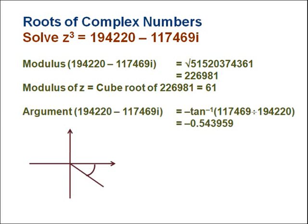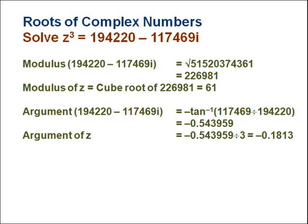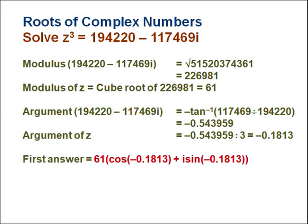Next we find the argument of the complex number. As seen from the diagram, it will be negative, so we compute −arctan(117,469 / 194,220) = −0.543959. To find the argument of one cube root, we divide by 3, giving −0.1813. So the first root has modulus 61 and argument −0.1813: 61(cos(−0.1813) + i·sin(−0.1813)).